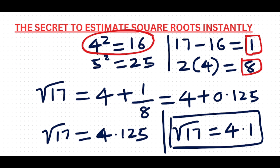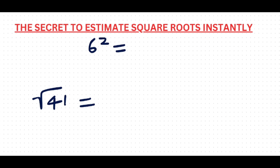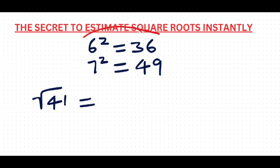You know that 41 is also not a perfect square. Let's see what are the perfect squares nearest to 41. So 6 squared is 36, and 7 squared is 49. Which one is the nearest perfect square to 41 — 36 or 49? Yes, 36 is the nearest perfect square to 41.